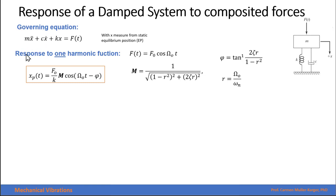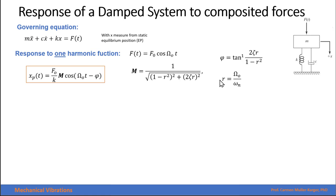We recall that the solution or response to a harmonic force is the amplitude of the force divided by the spring constant times the magnification factor, cosine of the same forcing frequency times t minus a phase angle. The phase angle can be calculated with this expression, and the magnification factor with this expression, where r is the frequency ratio and zeta is the damping ratio.